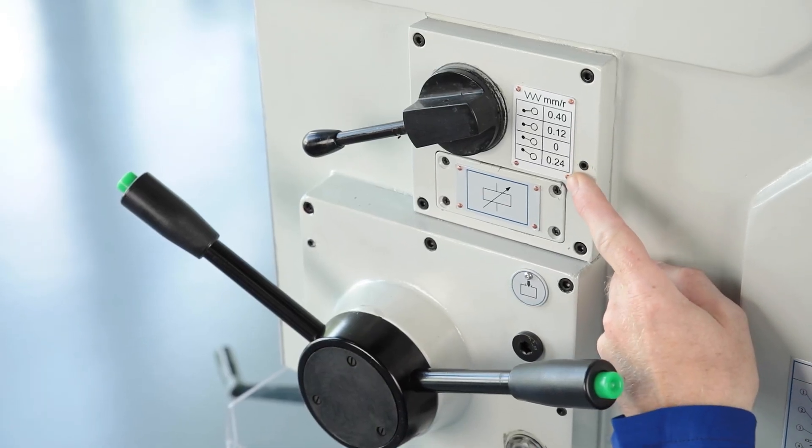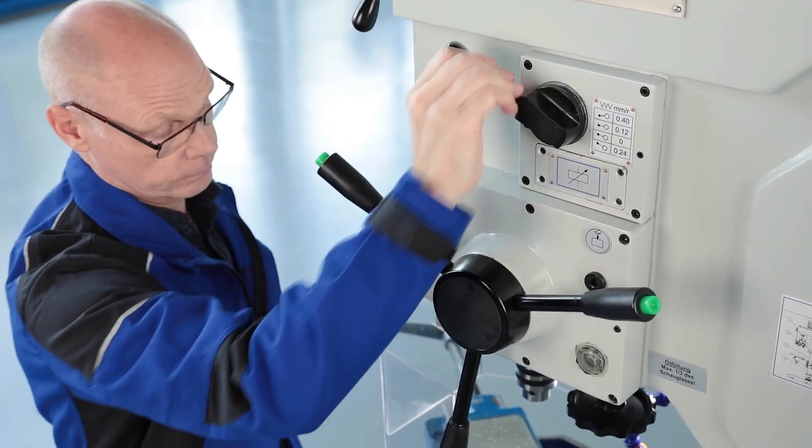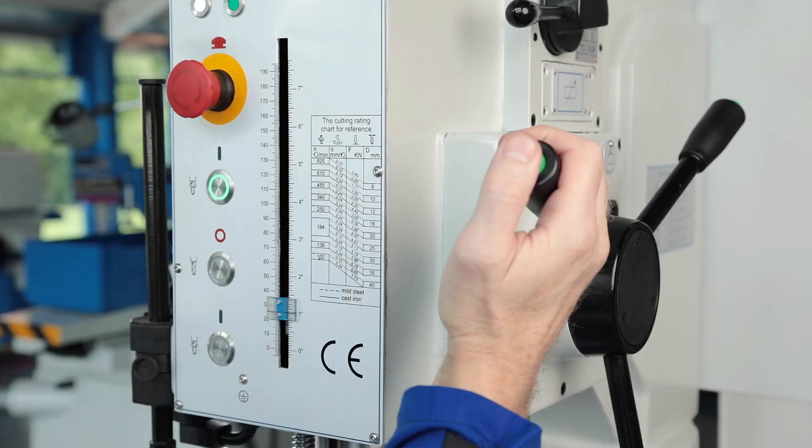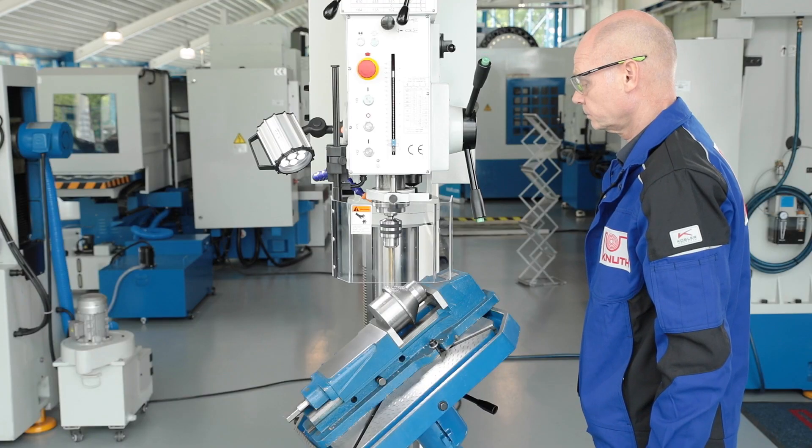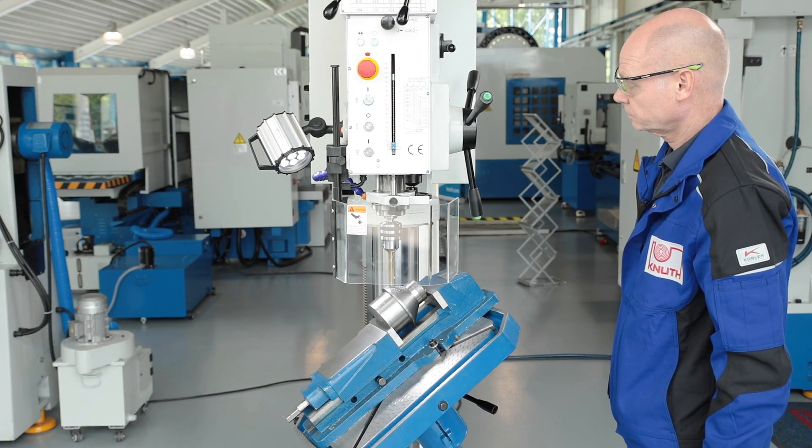The 3-stage feed gear integrated in the drill head runs in a low-maintenance oil bath and is easy to switch. The operator switches the automatic feed on and off smoothly and conveniently via a button on the turnstile using an electromagnetic clutch.